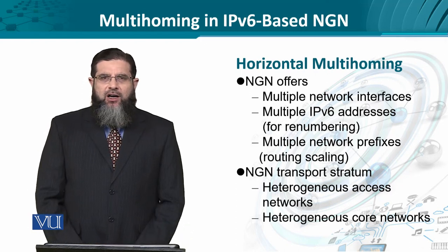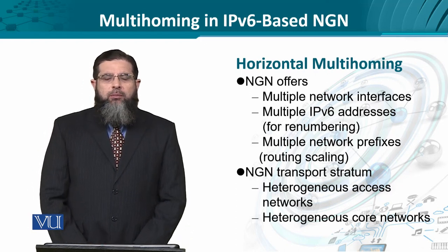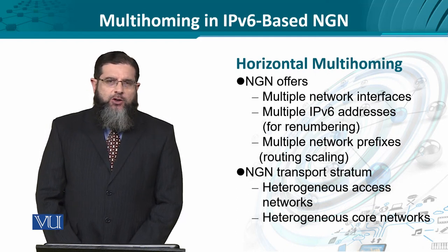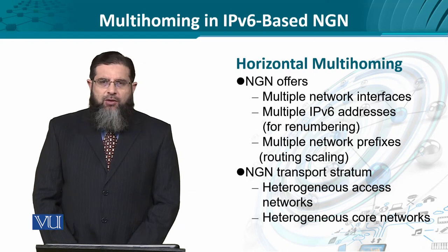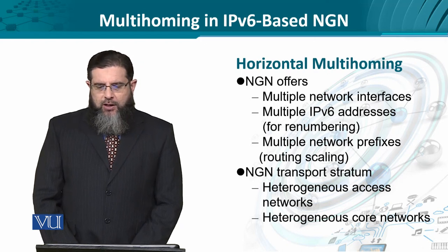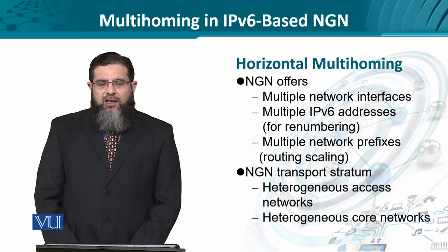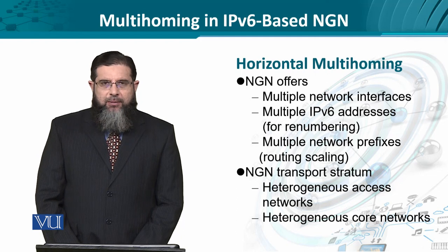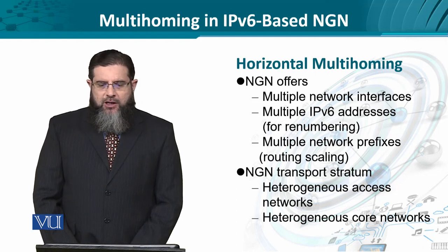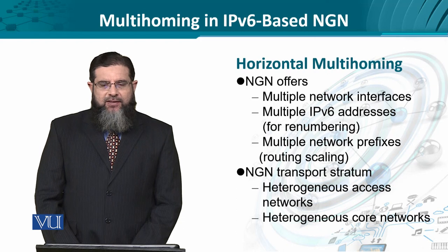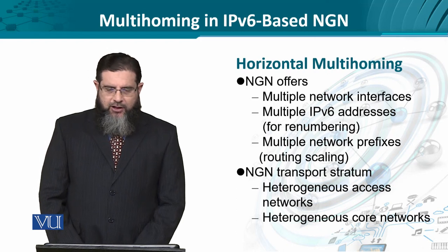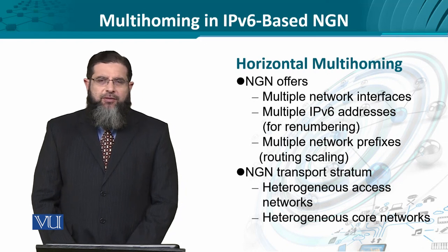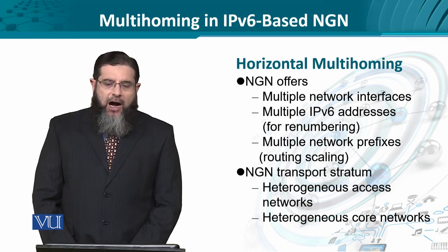Once we have the options to multihome in a variety of ways, NGN allows us to have horizontal multihoming or vertical multihoming. Since NGN has multiple network interfaces at the transport stratum, multiple IPv6 addressing at the network layer, and multiple network prefixes — meaning multiple ISPs are connected — this allows global routing scaling to take place.